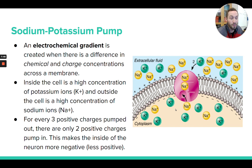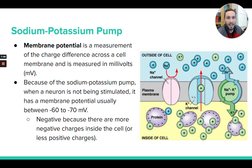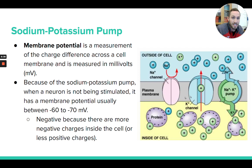If one side is less positive than the other side, relatively speaking you are negative compared to that other side — or just think of it as less positive. That electrical gradient — that difference in charge — can be measured in terms of something called a membrane potential. A membrane potential is a measurement of the charge difference across a cell membrane, and it's measured in millivolts. Whenever you have a separation of charge — when two sides of a membrane have a different charge — that creates a voltage.